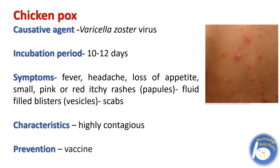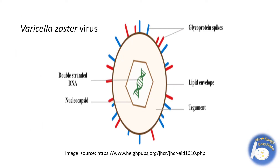This disease is highly contagious to people who haven't had the disease or been vaccinated against it. Prevention: vaccines are available. A scab is a dry, rough protective crust that forms over a cut, wound, or rashes.